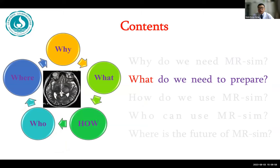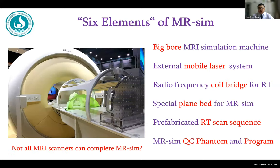The second aspect: what do we need to prepare? MRI simulation originated from diagnostic MRI, but has significant differences. In terms of software and hardware configuration, MRI simulation requires six elements: one, a large-bore MRI simulation machine; two, an external mobile laser system; three, a radiofrequency coil bridge for radiation therapy; four, a flat tabletop bed for MRI simulation; five, prefabricated immobilization skin markers; and six, MRI simulation QA phantoms.